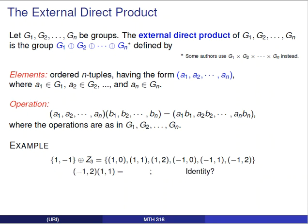Now let's compute (-1, 2) combined with (1, 1). Remember the operation is entry-wise. The first entries, -1 and 1, are multiplied — giving -1. The second entries, 2 and 1, are added modulo 3 in Z3 — giving 0. So the result is (-1, 0).